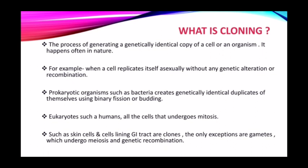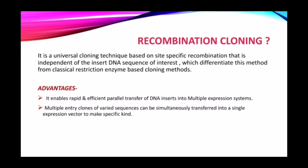In eukaryotes such as humans, all cells undergo mitosis. Cells such as skin cells and cells lining the GI tract are called clones. The only exceptions are gametes, which undergo meiosis and genetic recombination. So we can say skin cells and cells lining the GI tract are clones in humans.